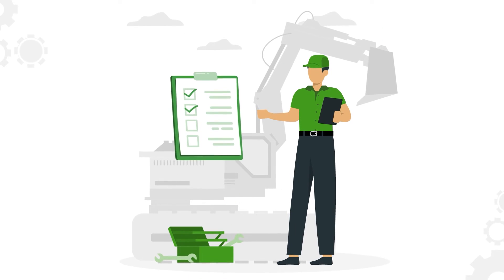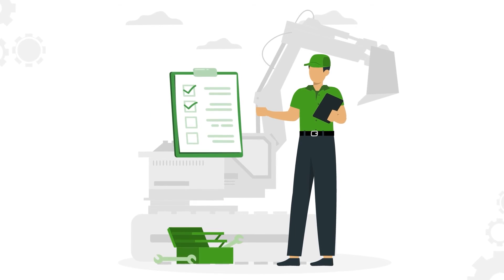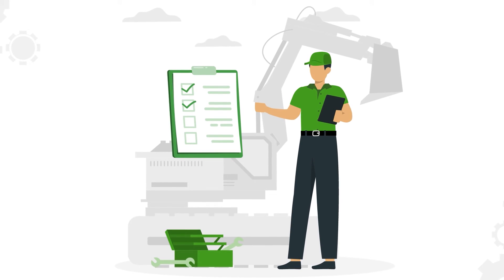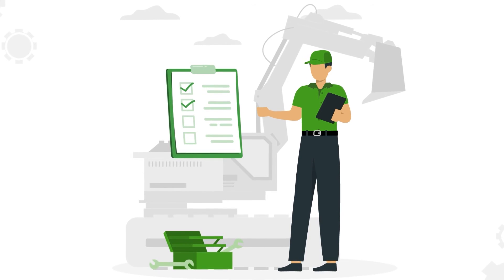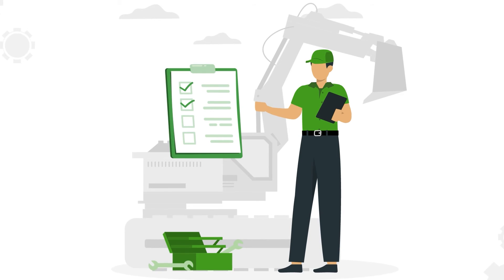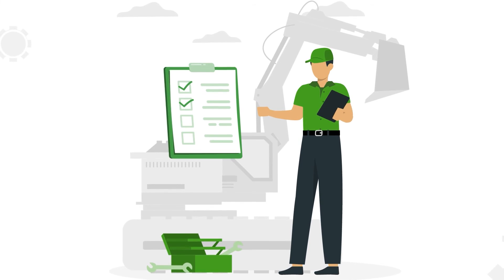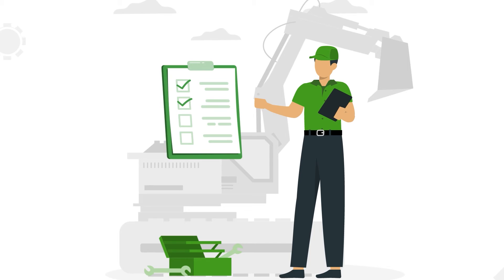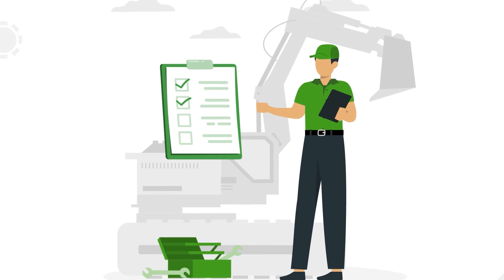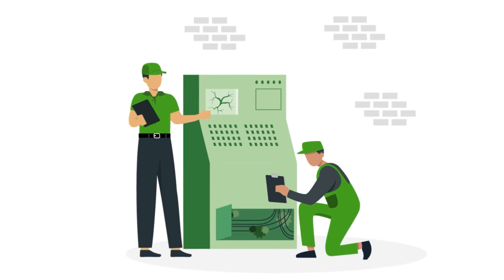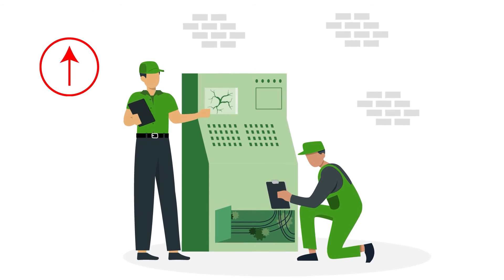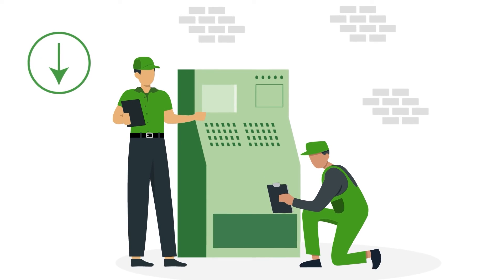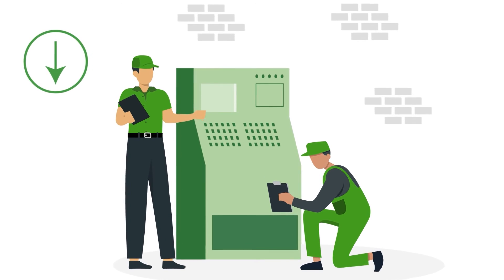Maintainability is all about MTTR. The more difficult it is to repair a piece of equipment, the higher the mean time to repair, and the lower the maintainability. Assessing maintainability could involve taking a closer look at your team's performance as well — maybe complicated work orders or poor inventory management are causing maintenance tasks to take longer than expected.